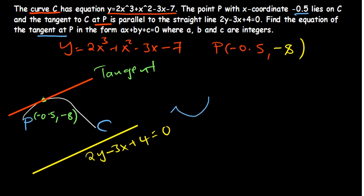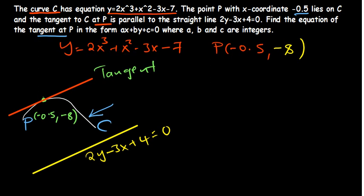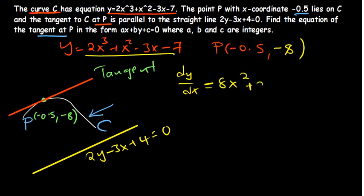I feel the information given about the curve is important and sufficient to find the tangent. Let's try it. The curve C has its equation given, so let's find dy/dx. Differentiating gives 8x squared plus 2x minus 3 as the gradient function.